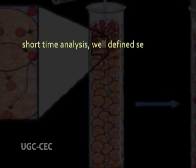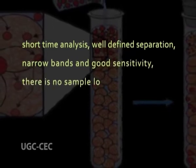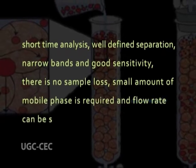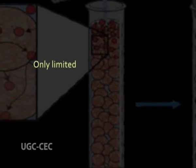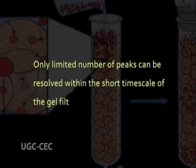The advantages of gel filtration chromatography are short time analysis, well defined separation, narrow bands and good sensitivity. There is no sample loss, a small amount of mobile phase is required and flow rate can be set. However, the disadvantage of gel filtration chromatography is that only a limited number of peaks can be resolved within the short time scale of the gel filtration run. The molecular masses of most of the chains will be too close for separation, showing nothing more than broad peaks.